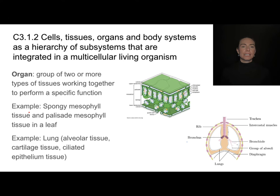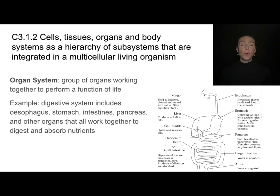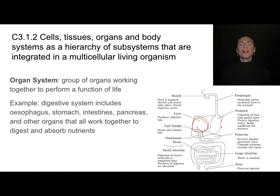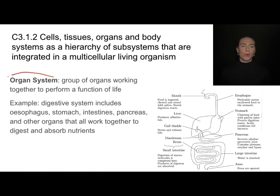An organ is two or more types of tissues coordinating and communicating together. If several organs work together for a common purpose, that is an organ system. For example, the digestive system includes our esophagus, stomach, small intestine, large intestine, pancreas, gallbladder, and liver. All of these are organs working together, and that is called an organ system.